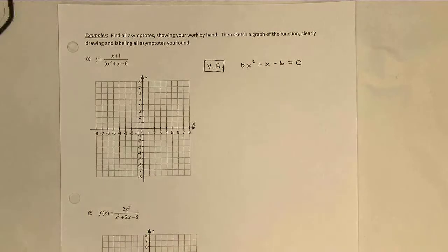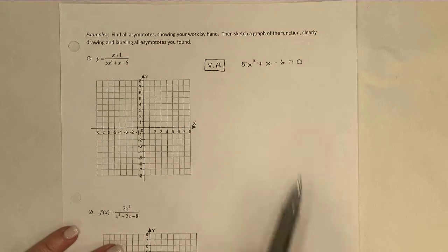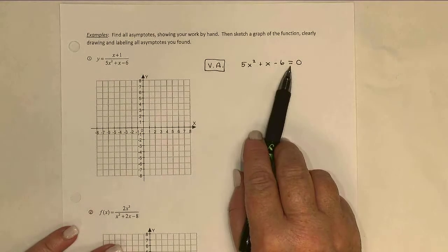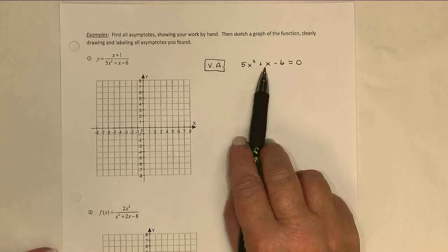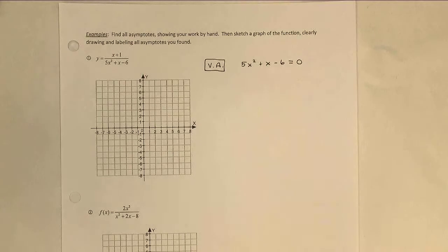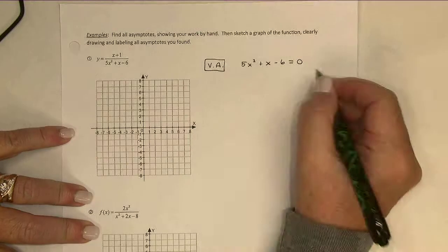Now, I just want to say a word here. If I was truly finding domain, I would say this is not equal to zero, but the vertical asymptotes occur where this is equal to zero. So subtle difference, but just in your thinking, are you looking for domain that can't be zero, or are you finding the asymptotes, which actually is exactly the points that do make the denominator zero?